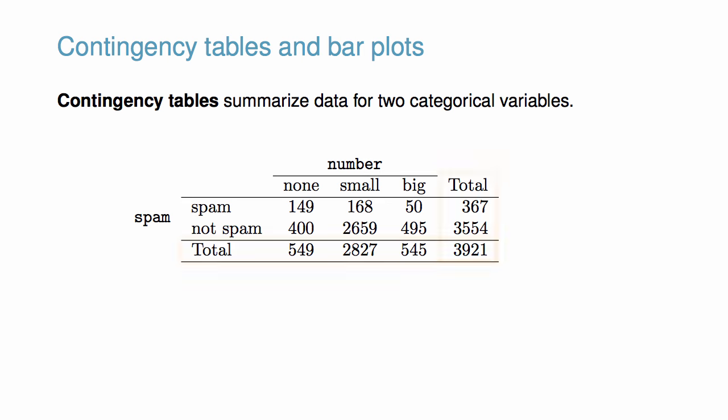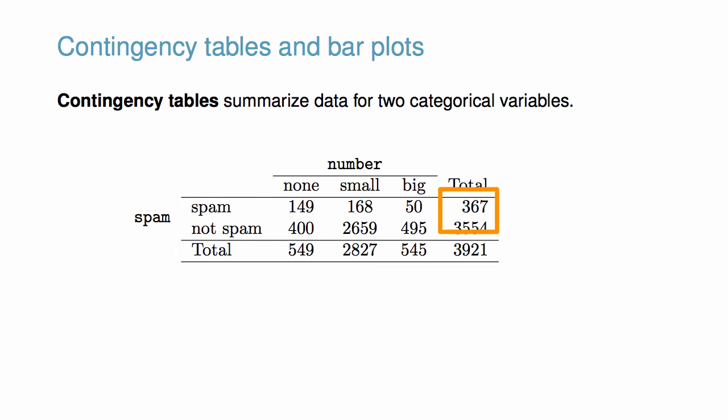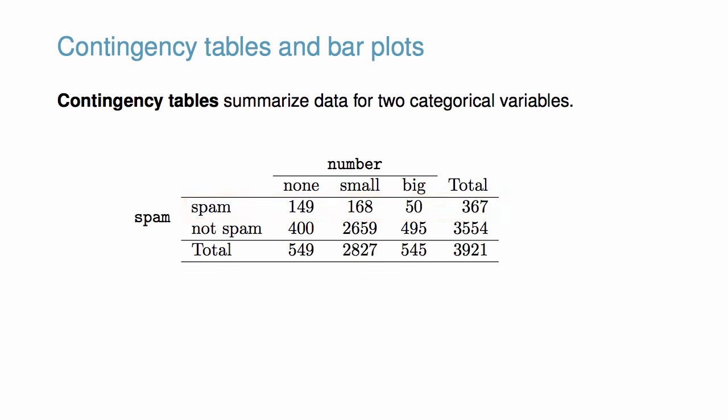Shifting our attention to the margins, we can see the count for all emails with a particular level for just one of the categorical variables. For example, there were 367 emails marked as spam in this dataset. Notice this sums up the numbers for each email marked as spam, regardless of whether it had no number, a small number, or a large number. Finally, we can see the total number of observations in the lower right-hand corner of the contingency table: 3,921.